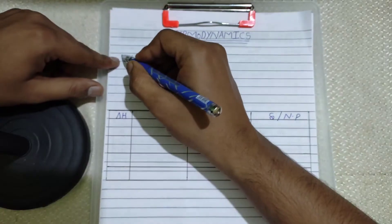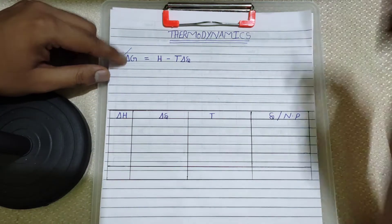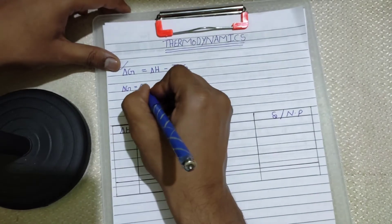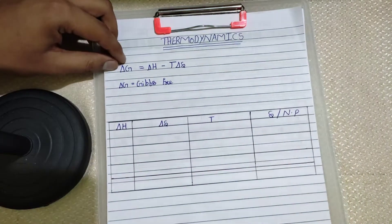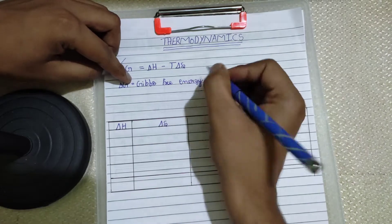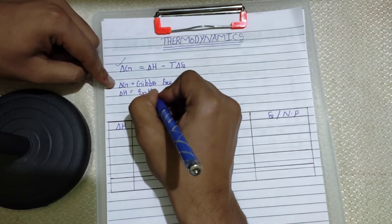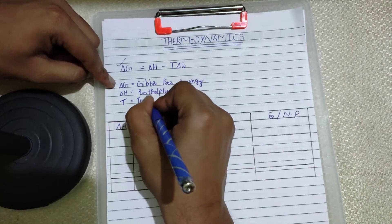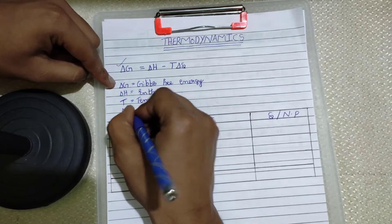Let's see the first equation. You might already know this basic equation: ΔG = ΔH − TΔS. Here ΔG means Gibbs free energy, ΔH means enthalpy, T means temperature in Kelvin, and ΔS is entropy.